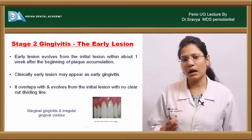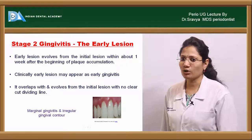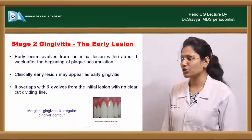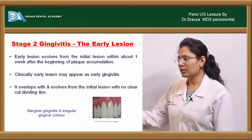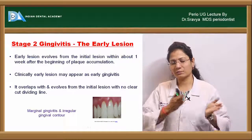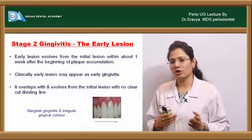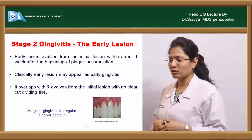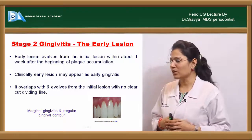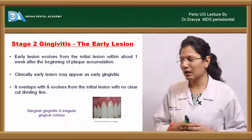If the plaque is not controlled at this stage, it evolves to the early lesion, which is the second stage of gingivitis. The transition from the initial to the early lesion occurs just within about one week after the beginning of plaque accumulation.